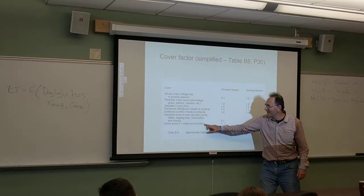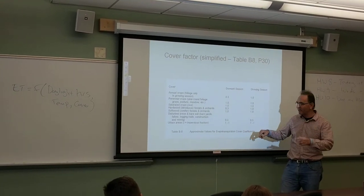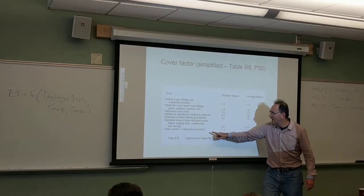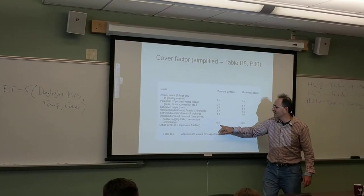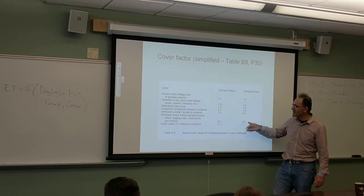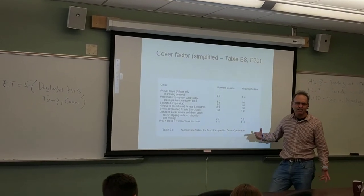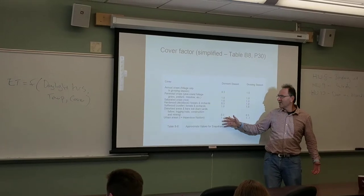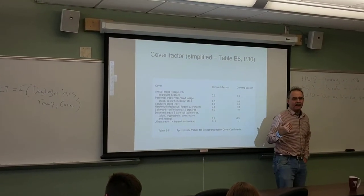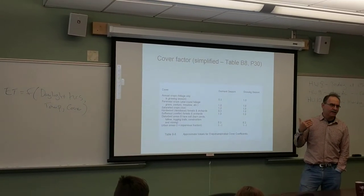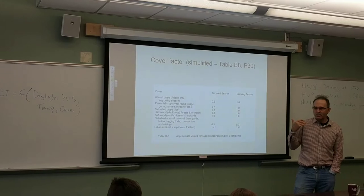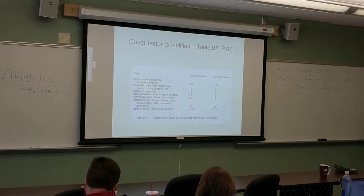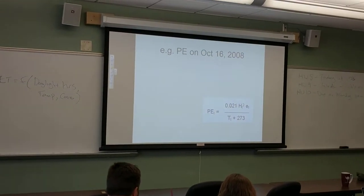In urban areas, you take 1 minus the impervious fraction as your cover factor — that's part of the exercise. These are very simple look-ups, and this is not meant to get something super accurate, but it gives you an idea of what's going on.